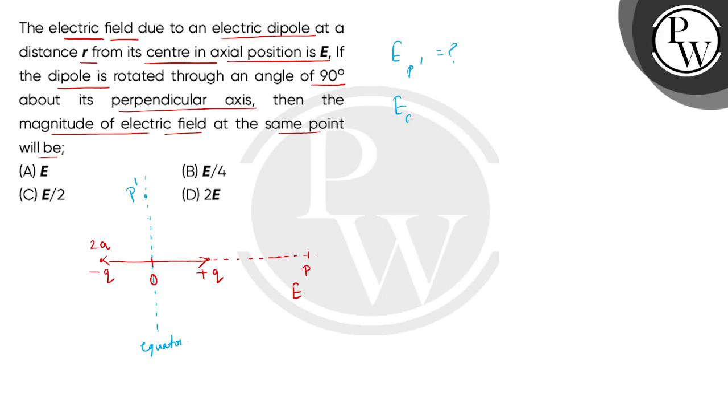As we know, the electric field at axial point is expressed as 2P divided by r cubed, where P is the dipole moment. What distance do we consider here? From O to P is r. And what is O to P dash distance? Also r.